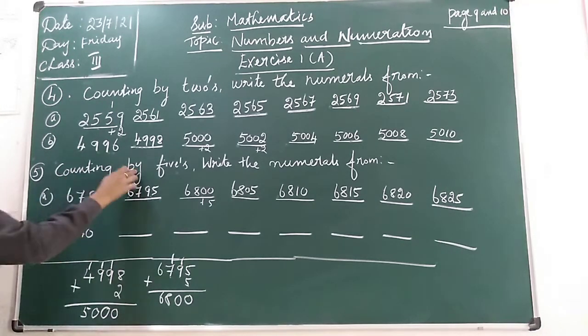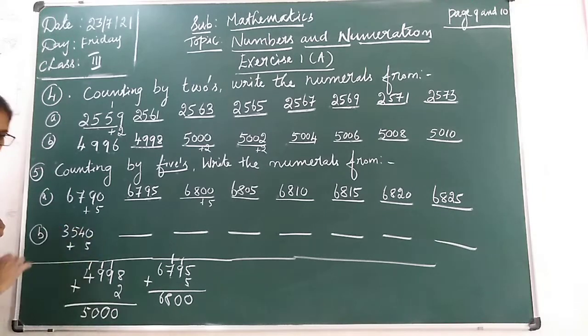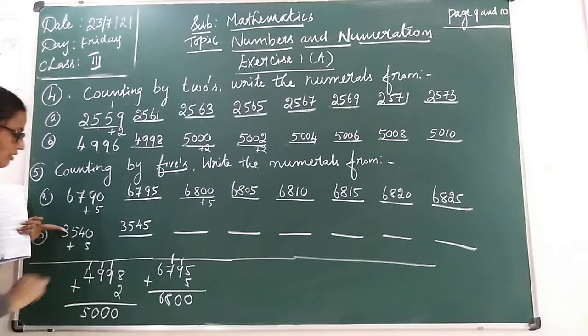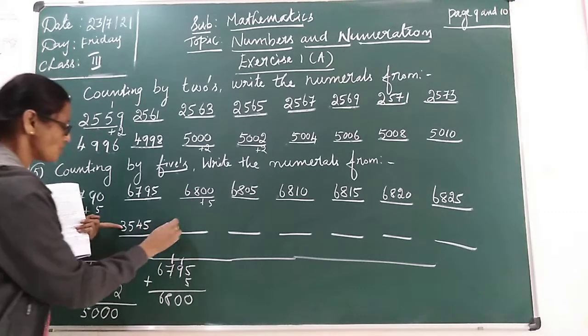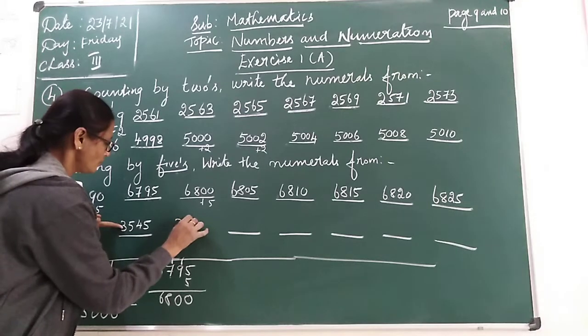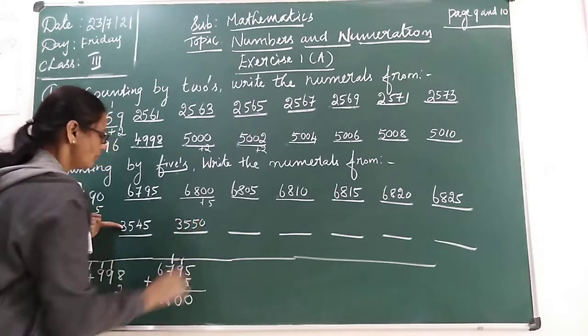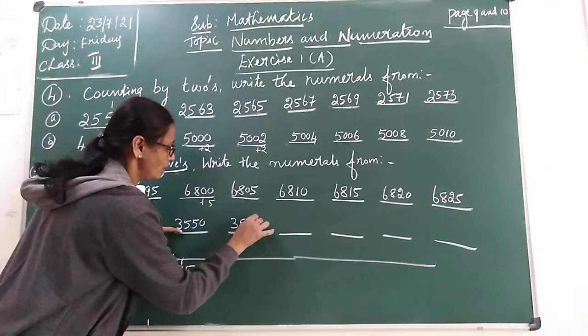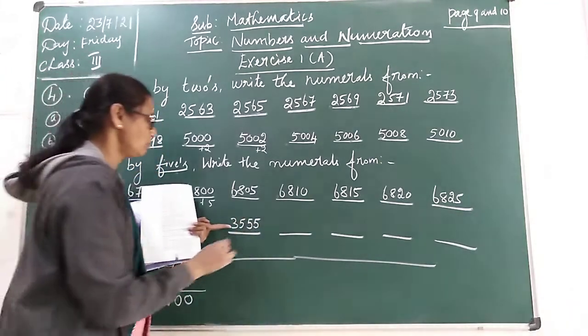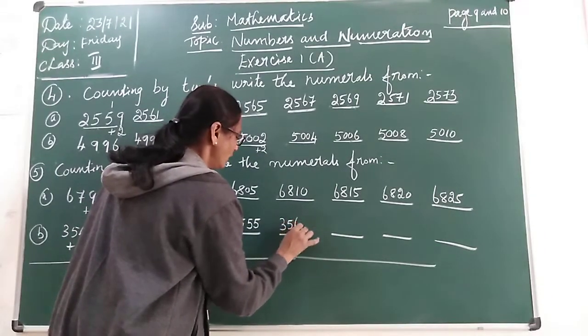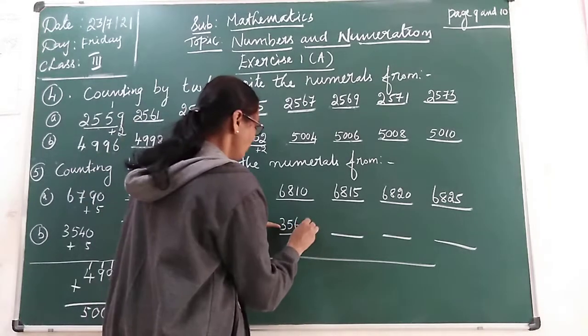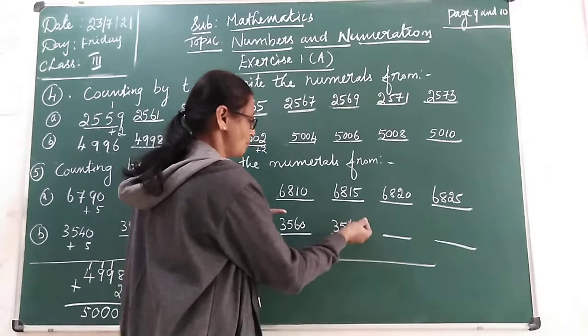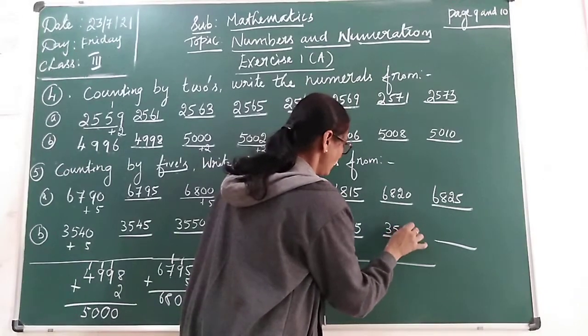Counting by 5's. So, we have to add 5 children. So, when you add 5, 3,545. 40 plus 5 is 45. 40 plus 5 is 3,050. 3,550. 545, 550. Next number, 3,555. Next number, 3,560. Next number, 3,565. Next number, 3,570.